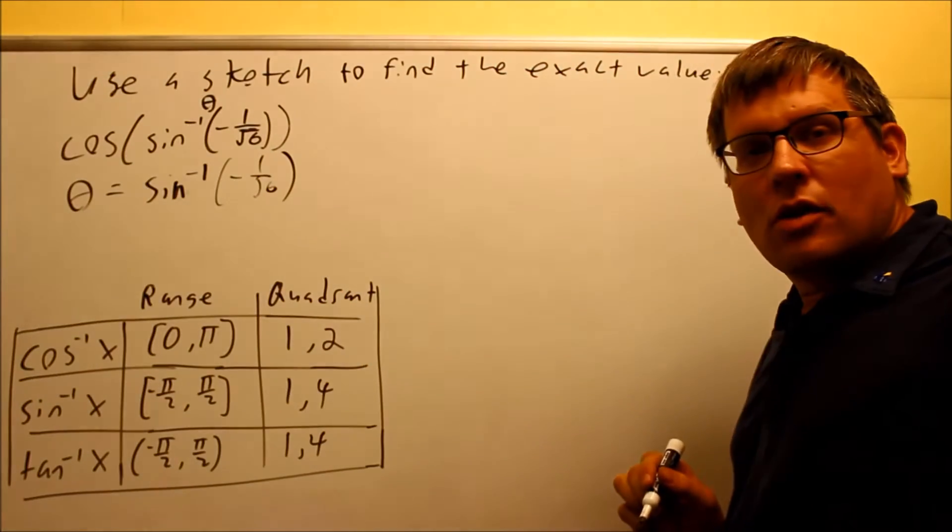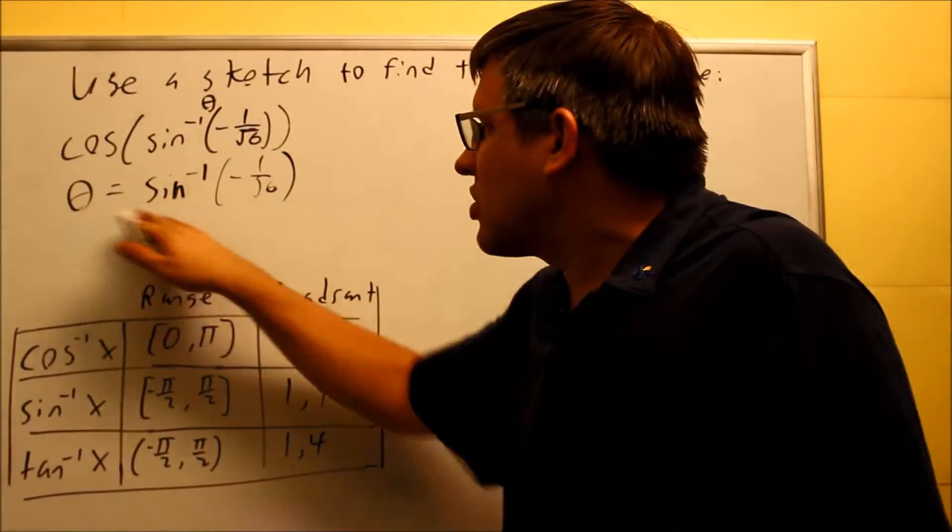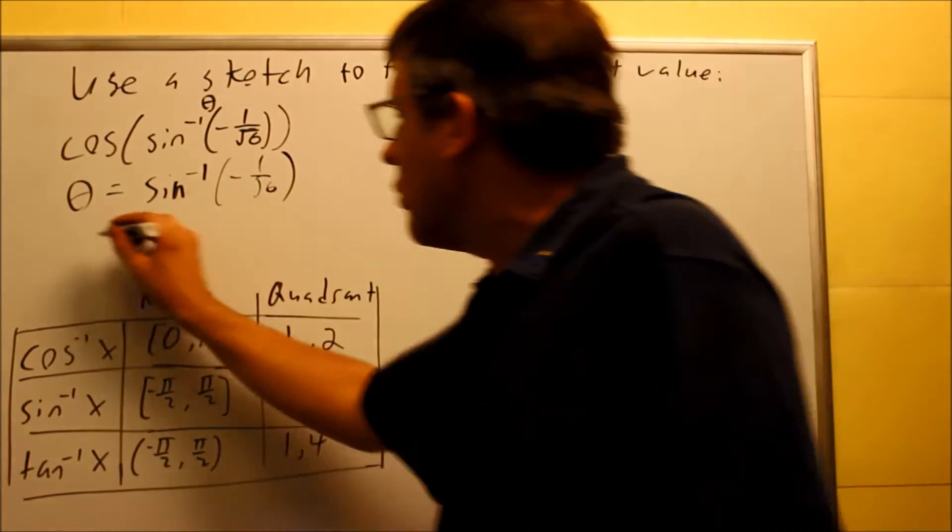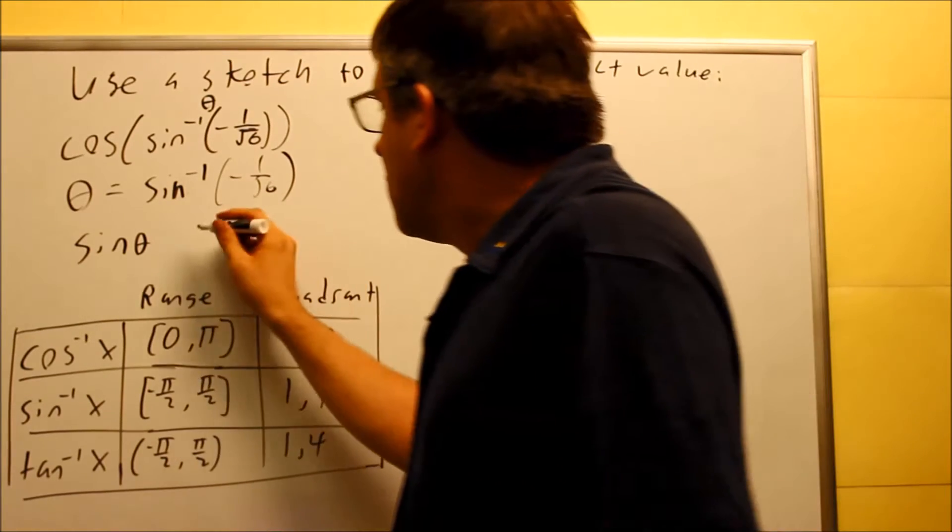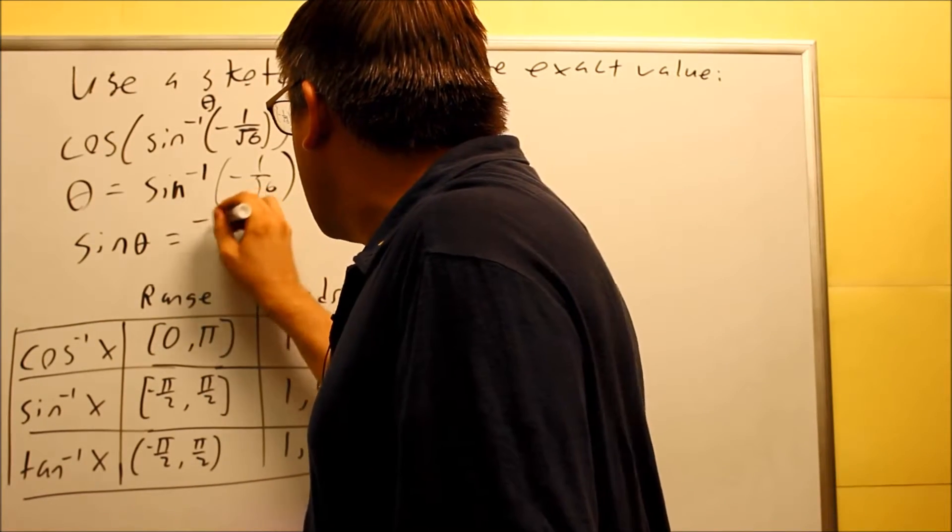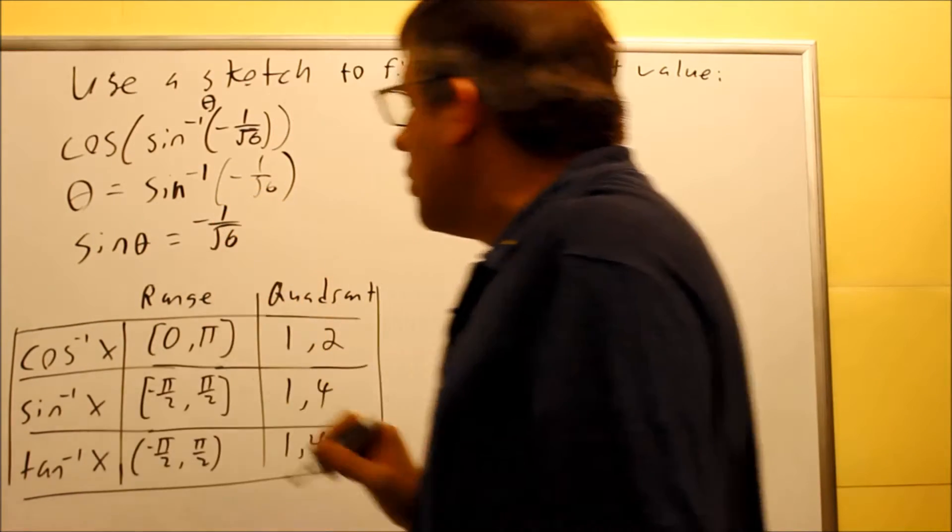Okay, so we got that first of all. We're going to apply a sine to both sides, and we would end up getting sine theta. If we apply a sine to this, the inverse sine is going to cancel, and we get sine theta equals negative 1 over root 6.